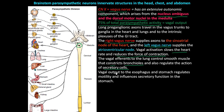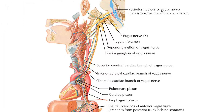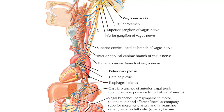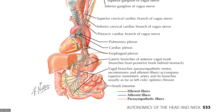Vagal output also regulates how much mucus is produced. Vagal output of the esophagus and stomach regulates motility and influences secretory function. Looking at the diagram, the posterior nucleus of the vagus nerve is where those cell bodies lie. The vagus exits the skull through the jugular foramen, passing the superior and inferior vagal ganglia without synapsing, then gives off superior cervical cardiac, inferior cervical cardiac, and thoracic cardiac branches, plus the pulmonary plexus, innervating the heart, liver, stomach, small intestine, and first half of the large intestine.